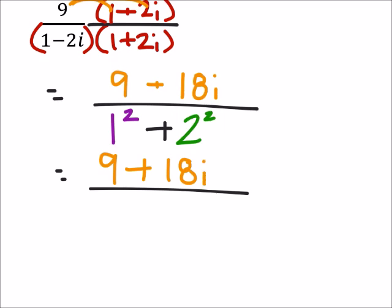But I've got that 1 squared which is 1, plus 2 squared which is 4. So 1 plus 4 is 5.